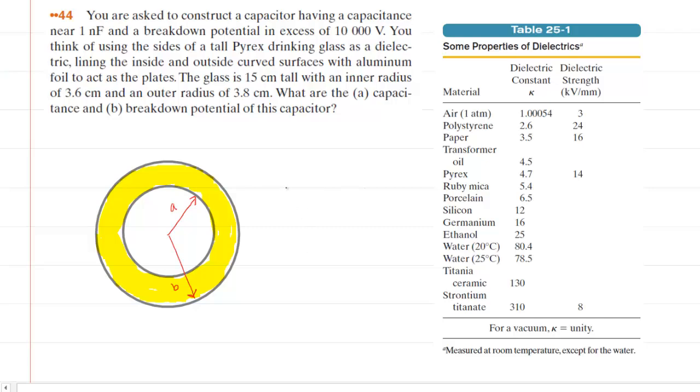We have a cylindrical capacitor filled with a dielectric material. The Pyrex glass is serving as the dielectric material. We're looking down on top of the glass, and there is an inner radius marked A and an outer radius marked B. The Pyrex material is serving as a dielectric material.